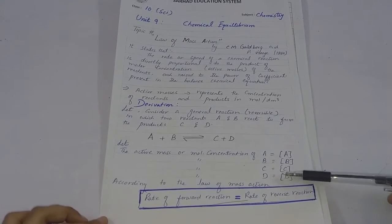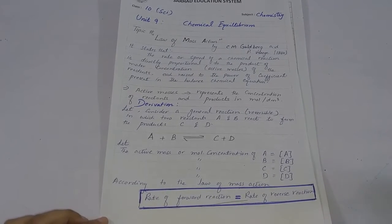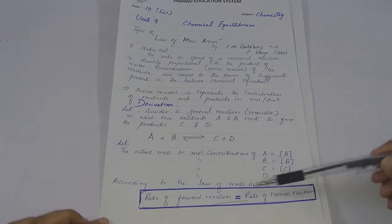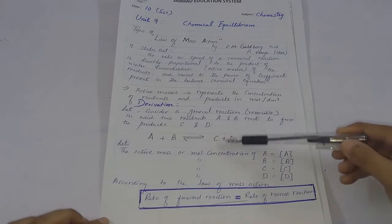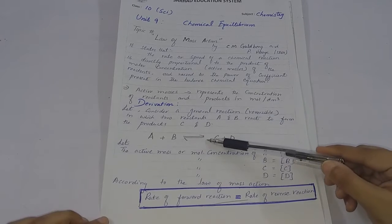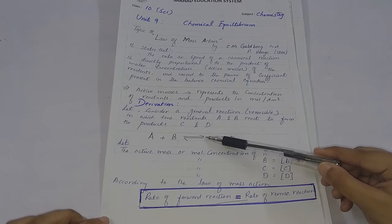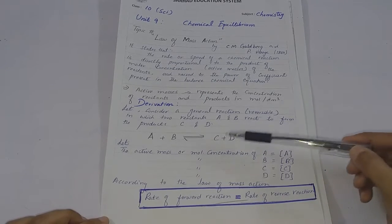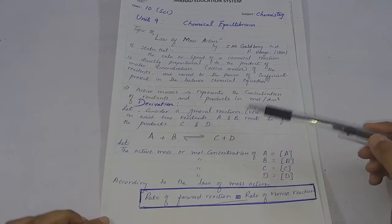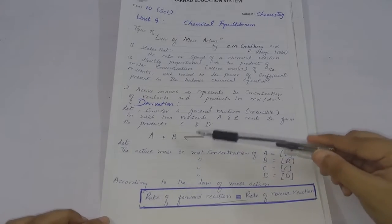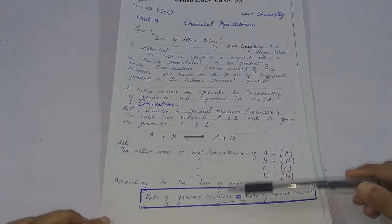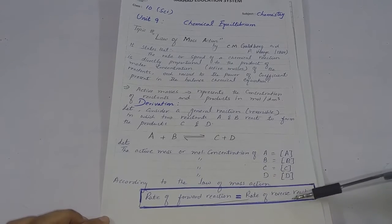According to the law of mass action, at equilibrium the rate of the forward reaction equals the rate of the reverse reaction. This reaction is a reversible reaction, as studied in previous lectures, where products can change back into reactants.